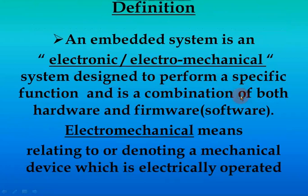Now coming to the definition of an embedded system: an embedded system is an electronic or electromechanical system designed to perform a specific function, and it is a combination of both hardware and firmware.